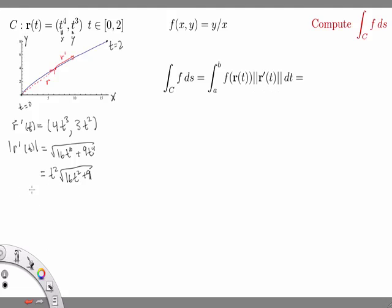The other factor comes from plugging in the parameterization r of t in for x and y. f of r of t is f of, well x is t to the 4th and y is t cubed, so y over x is t cubed over t to the 4th. So f of r of t is 1 over t.